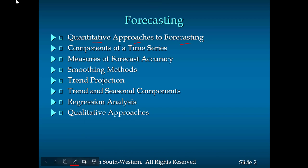We're also going to look at the components. We have four components — four elements — in time-series analysis. We're going to look into each one of them again, and then measure the forecasting error. We have a couple of indices used to measure forecasting accuracy. We're also going to look at exponential smoothing methods, trend projection, the seasonal component, as well as regression analysis.